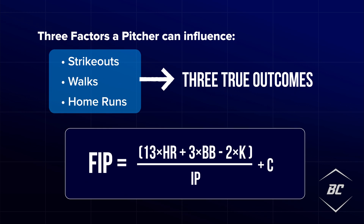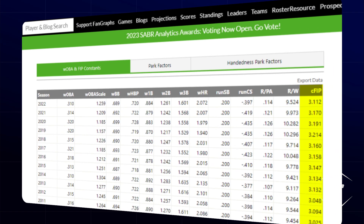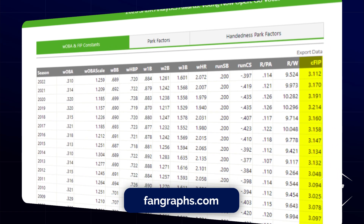FIP is calculated using the following equation. We use linear weights to correctly value each outcome, with C being a constant which matches league average FIP to league average ERA. You can find each year's league constant on Fangraphs.com.